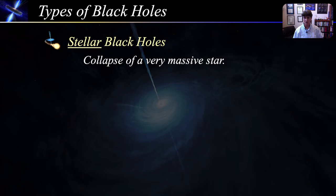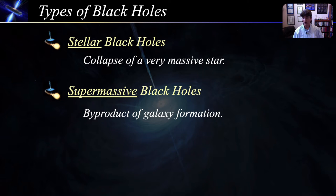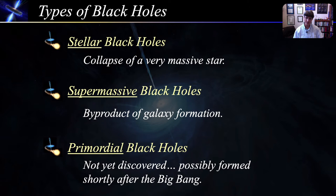Stellar black holes are formed when very massive stars, those greater than 25 solar masses, collapse at the end of their lives. The next are supermassive black holes, which are likely to exist in the center of most large galaxies, including our own Milky Way. Although we don't exactly know how supermassive black holes form, they seem to be intimately related to the formation and growth of galaxies. The third type are very small primordial black holes. Although they have not been discovered, theory suggests that they may have formed shortly after the Big Bang in the very early universe. We will spend most of our time today on stellar black holes, since they are the best understood.